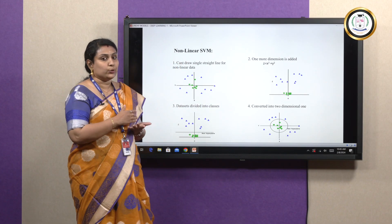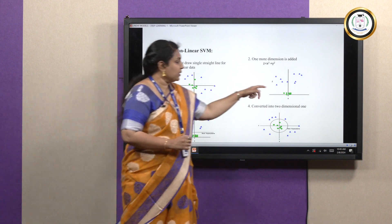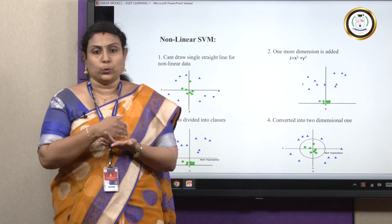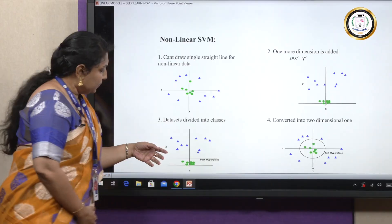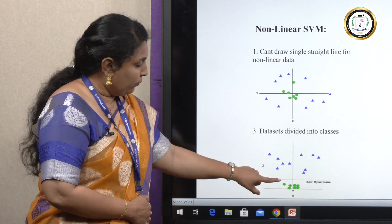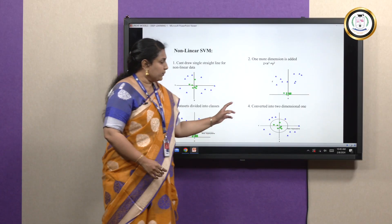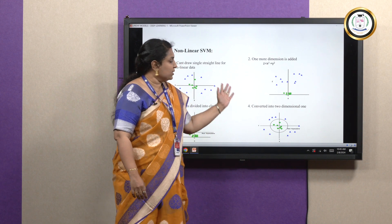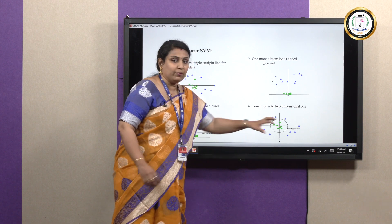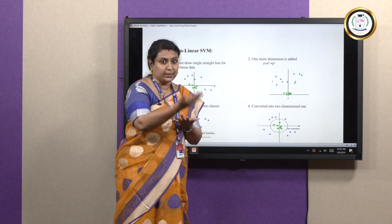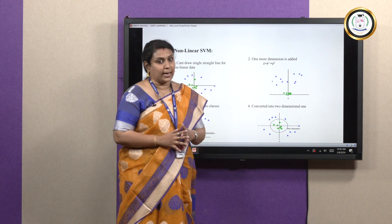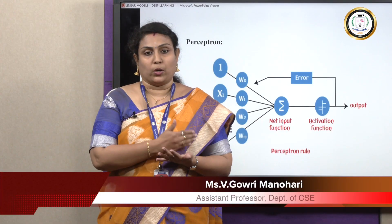Now this has been converted into linear data. After dividing into two classes, they can be easily separated. If I draw a best fit line, the two data classes can be divided easily. This is the best hyperplane where the two data sets have been separated into class A and class B. Converting back to two-dimensional space, the separating line between the middle data and the outer data is the best hyperplane. That concludes SVM as one of the linear models.